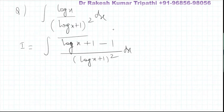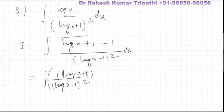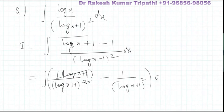We write log(x) + 1 minus 1 in the numerator and then separate the integrals, so that it becomes one upon (log(x) + 1). Then log(x) + 1 upon (1 + log(x) + 1) whole squared — the log(x) + 1 terms cancel — leaving one upon (log(x) + 1) whole squared dx.